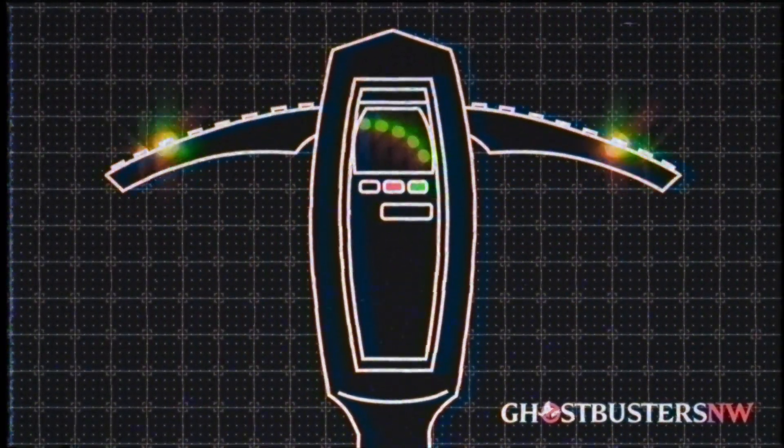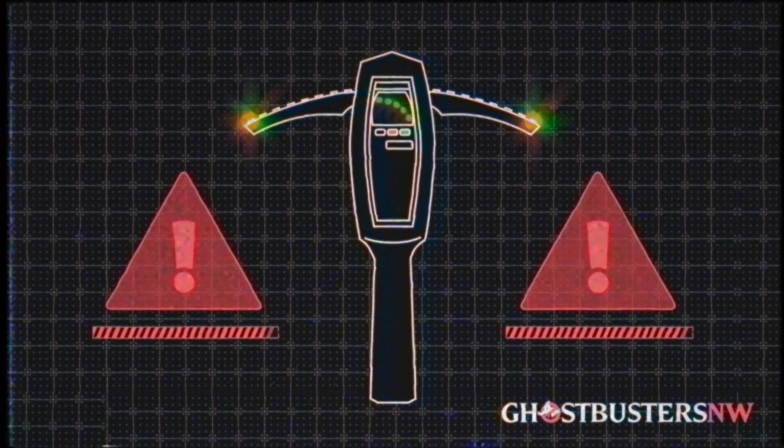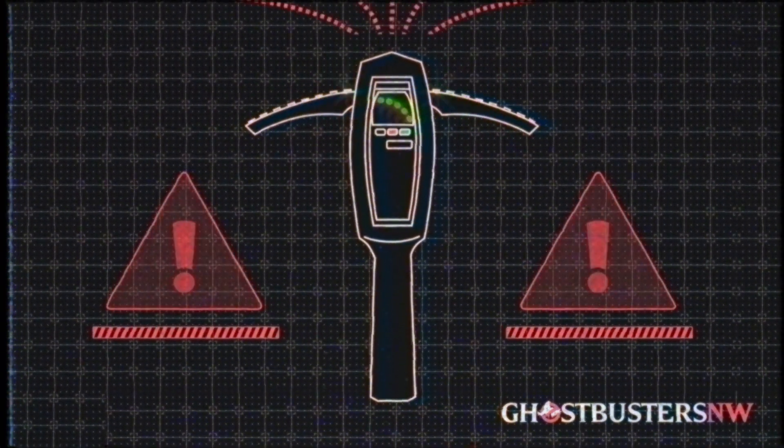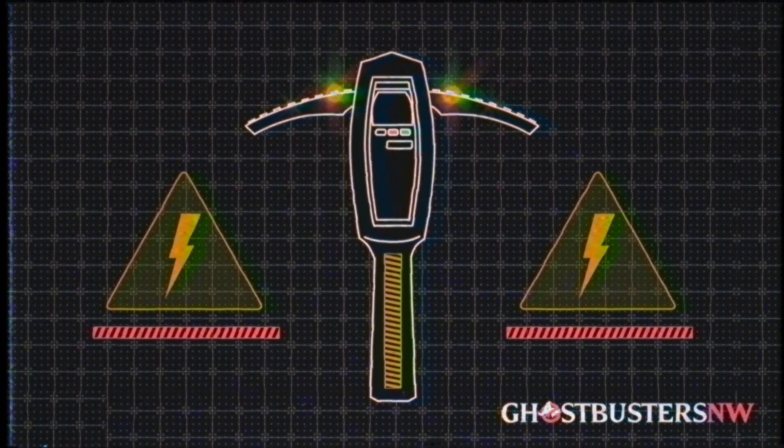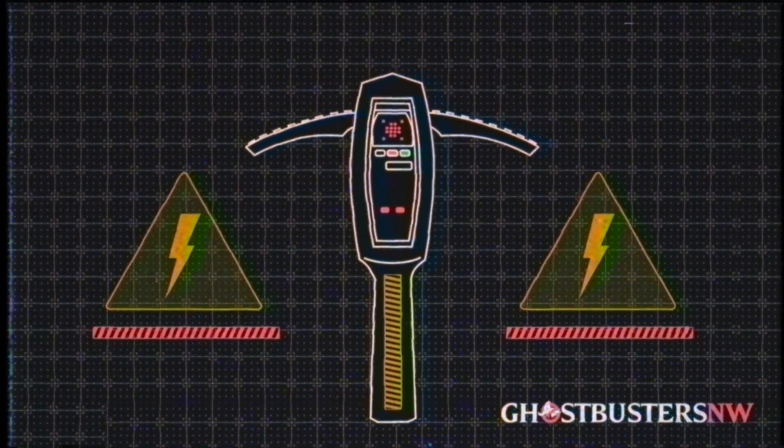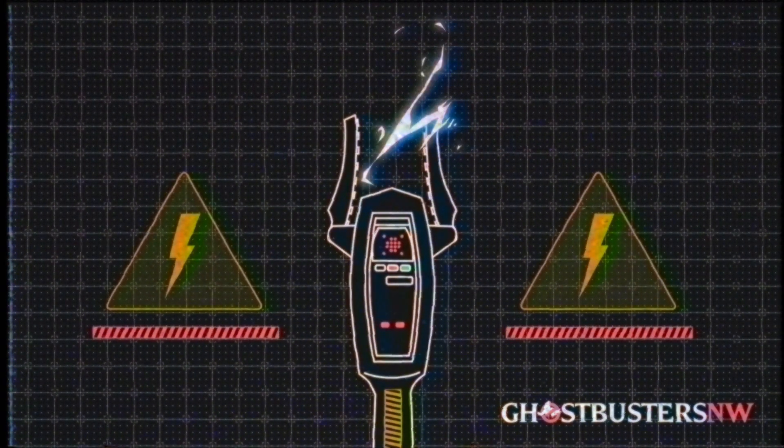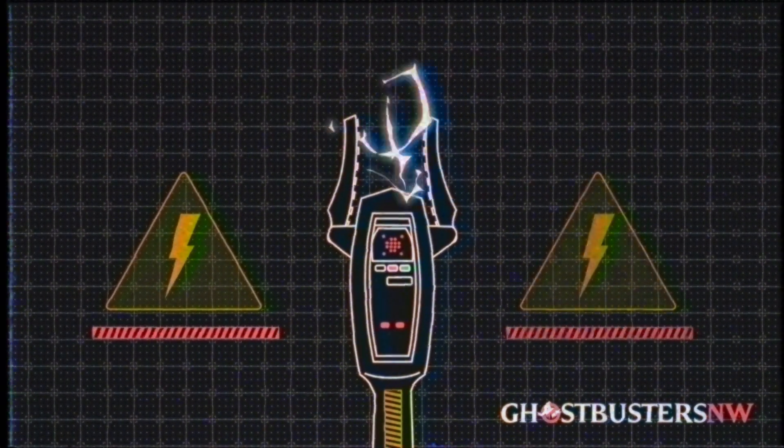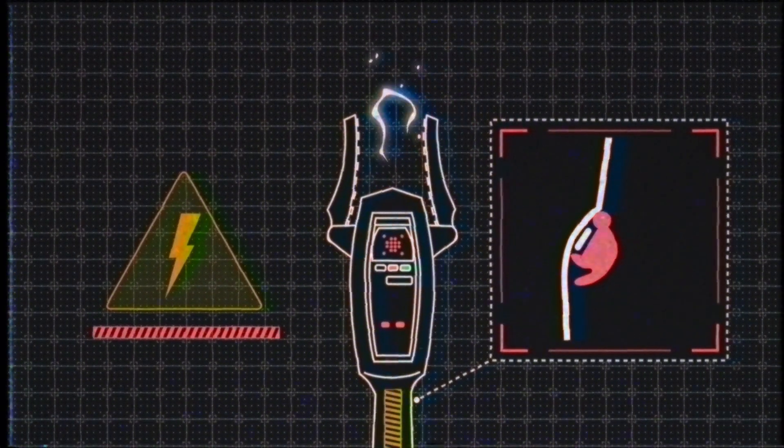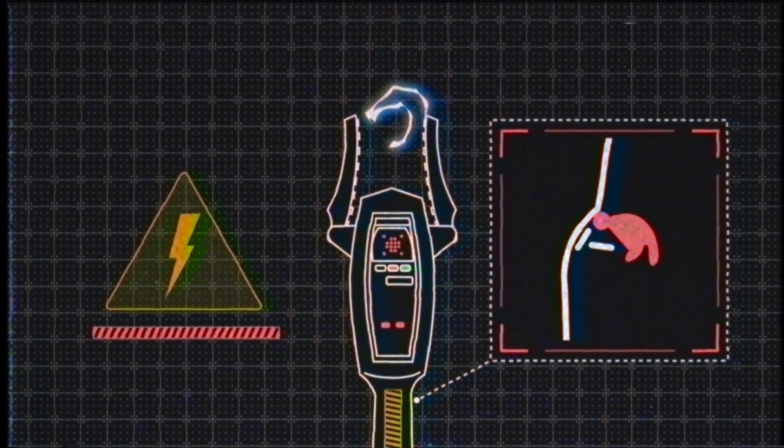In later models, the PKE was given a fourth mode to be used when tracking manifestations with dangerous levels of PKE. These highly charged particles can be temporarily stored within the PKE meter and redirected through the wings as a psychokinetic taser, giving a Ghostbuster a short-term defensive tool if they are unable to use a proton pack. This mode is activated by flipping a toggle switch located on the back of the PKE meter. Be careful when using this mode: while the PKE taser is painful to ghosts, it can be deadly to the living.